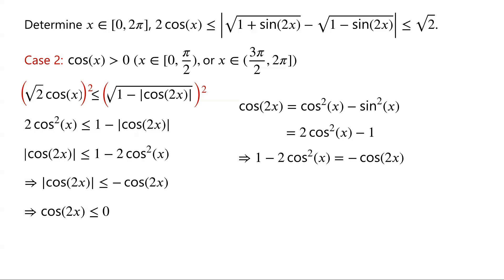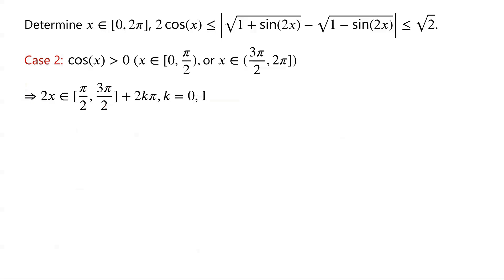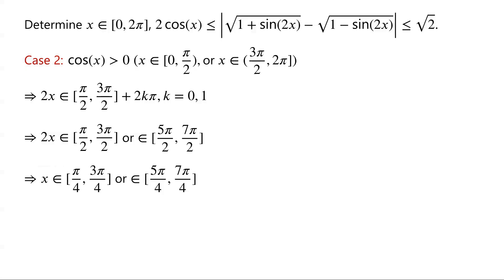We are given x ∈ [0, 2π], so 2x ∈ [π/2, 3π/2] + 2kπ, where k = 0 or 1. When k = 0, 2x ∈ [π/2, 3π/2]. When k = 1, 2x ∈ [5π/2, 7π/2]. So x ∈ [π/4, 3π/4] or x ∈ [5π/4, 7π/4].